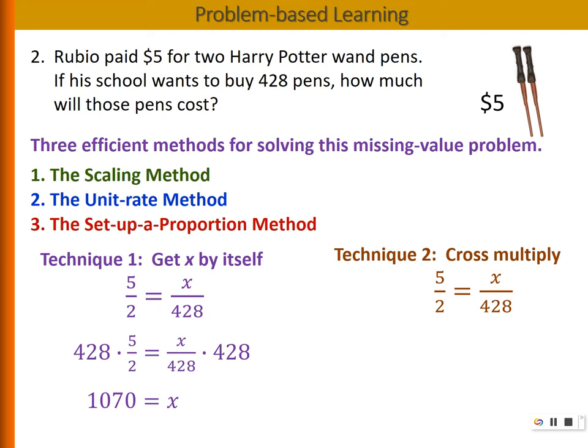So technique 2, basically what we do is we multiply the 2 and bring it up to the numerator. And then the denominator 428, we multiply across and bring it up to the numerator. So what we get is actually 428 times 5 equals x times 2.